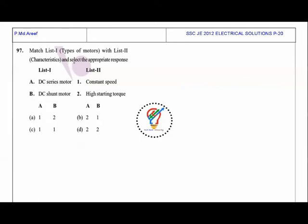Next question: match list one types of motors with list two characteristics and select the appropriate response. DC series motor: the torque is proportional to armature current squared. That means it is used for high starting torques.